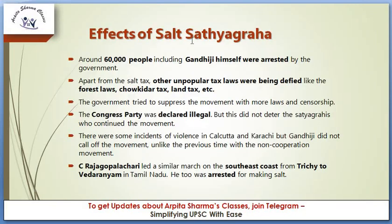Effects of the Salt Satyagraha: Around 60,000 people, including Gandhiji himself, were arrested by the government. Apart from the salt tax, other unpopular tax laws were defied, including forest laws, the Chaukidar tax, and the land tax. The government tried to suppress the movement with more laws and censorship, and the Congress party was declared illegal. But this did not deter the satyagrahis, who continued the movement. There were some incidents of violence in Calcutta and Karachi, but Gandhiji did not call off the movement, unlike with the non-cooperation movement.